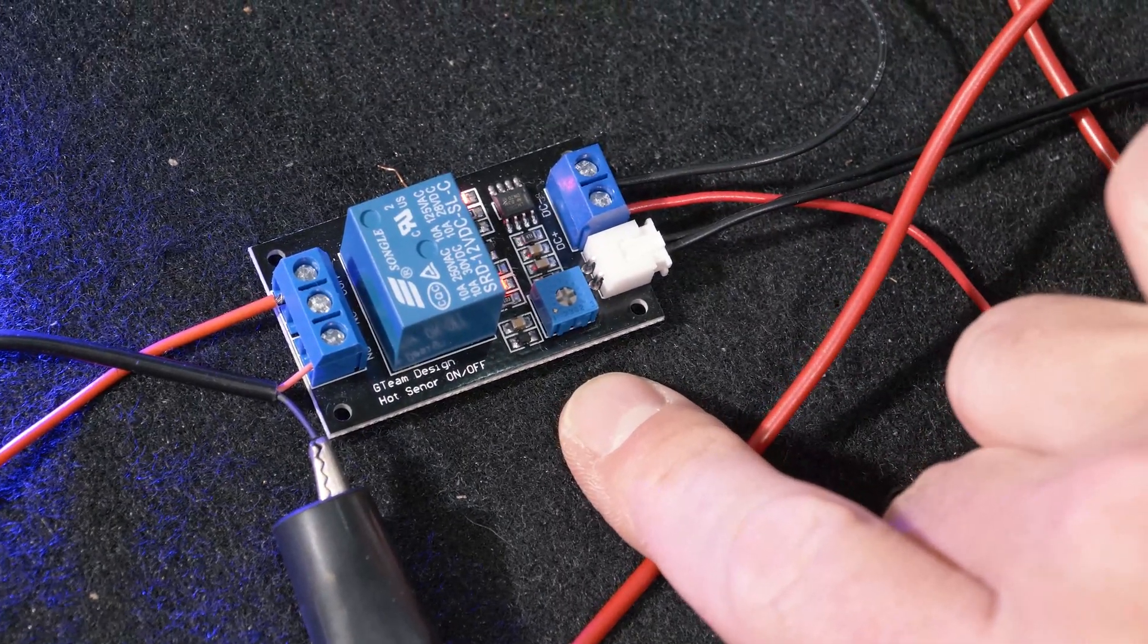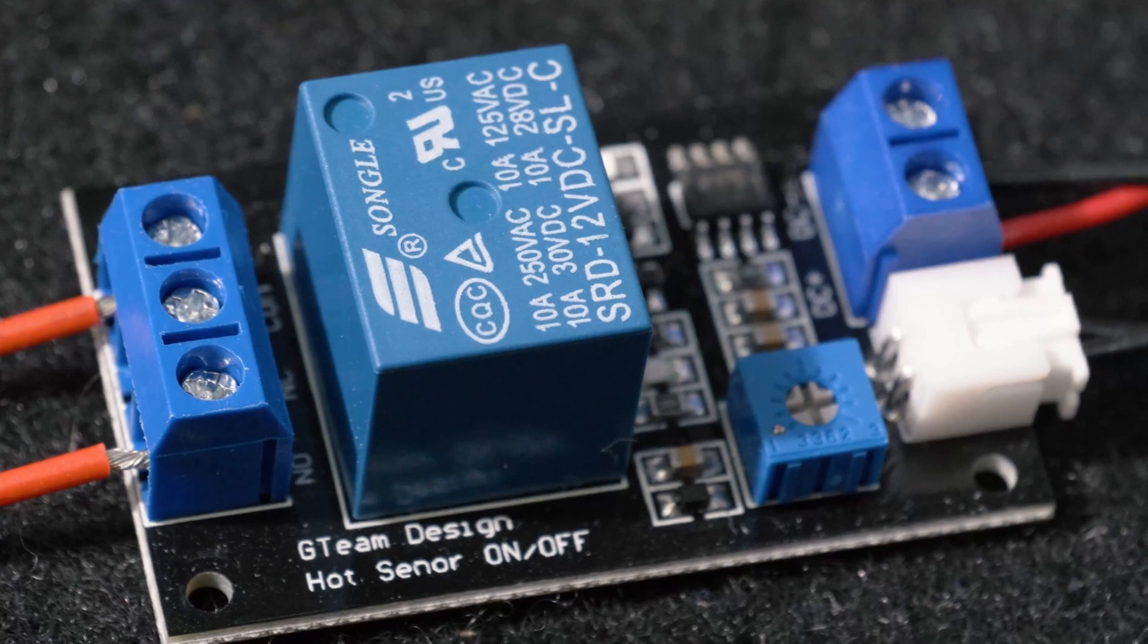Our potentiometer right here is our adjustment for our temperature threshold to get the relay to trigger.